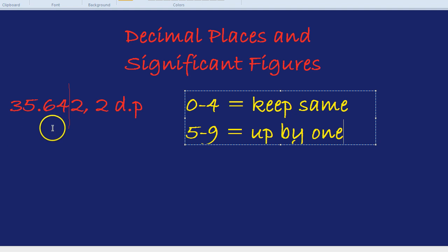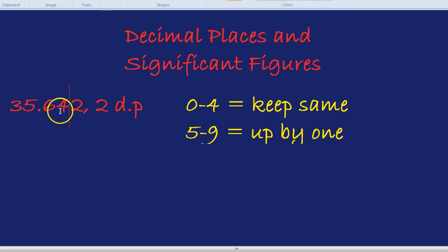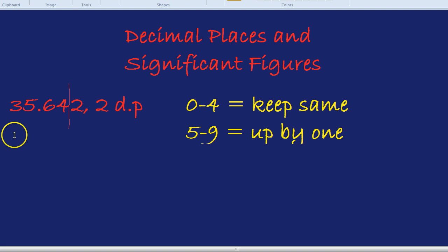Let's quickly try that. Here, the number to the right of the line is a 2. So is that number to the left, the 4, is it going to go up or is it going to stay the same? It's going to stay the same. So our number to 2 decimal places is now 35.64.